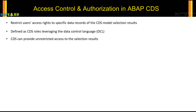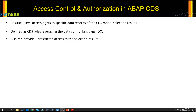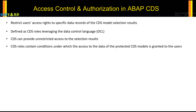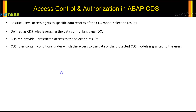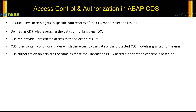CDS can also provide unrestricted access based on selection criteria, so access control is not only for restricting but also for giving unrestricted access to certain users based on roles. CDS roles contain conditions under which access to the data of the CDS model is granted to users — controlling visibility of CDS data based on roles, just like what we have with transaction codes. CDS authorization objects are the same as PFCG-based authorization objects used in T-codes.